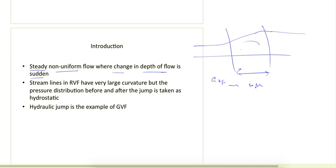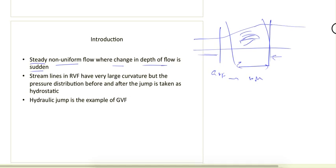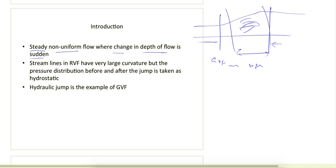In the zone where rapidly varied flow forms, we cannot assume the pressure to be hydrostatic. However, to simplify calculations before and after the rapidly varied flow — as we will see in the case of hydraulic jump — we apply the pressure distribution as hydrostatic at those sections. Hydraulic jump is the best example of rapidly varied flow.